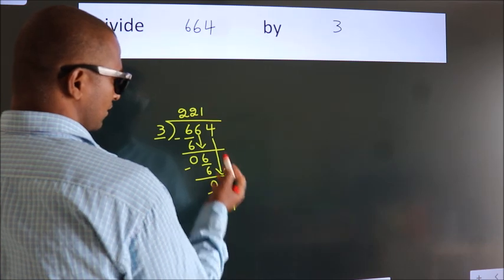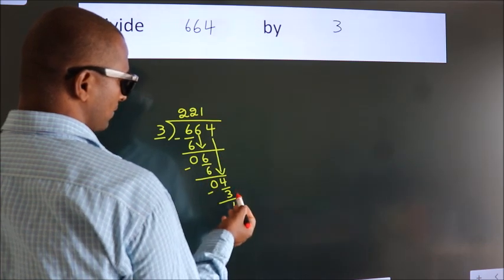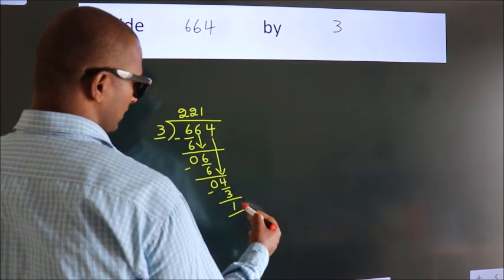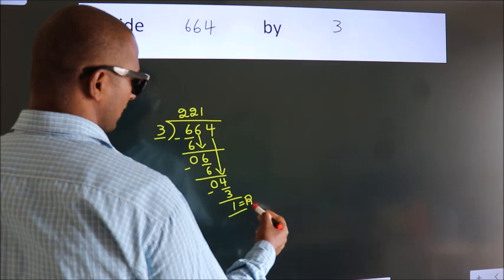After this, no more numbers to bring it down. So, we stop here. This is our remainder. This is our quotient.